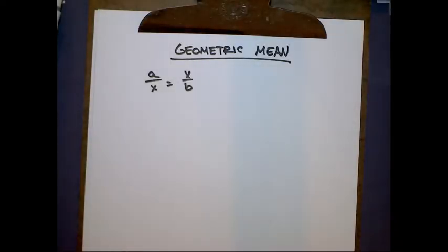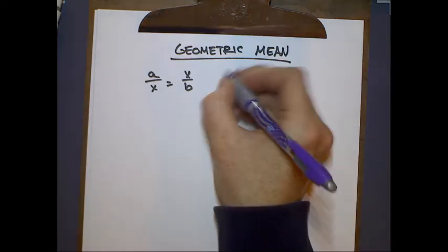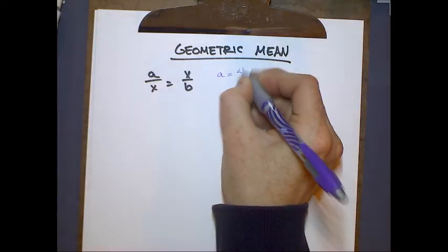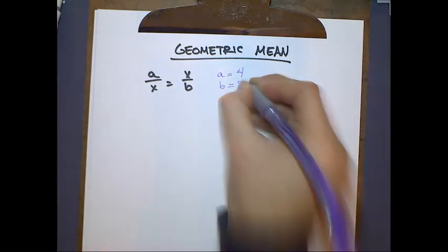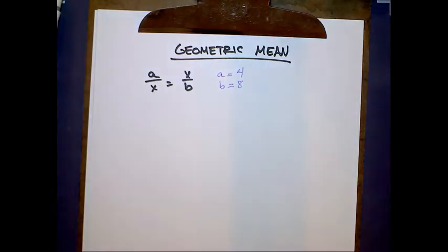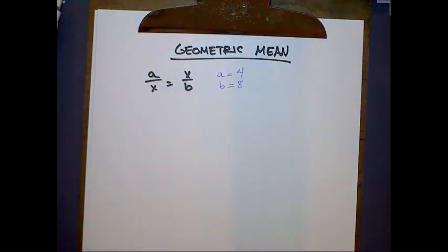The geometric mean of two numbers a and b is the value x that satisfies the following proportion. In other words, if we had two numbers, let's say 4 and 8, we could find their geometric mean by plugging them into this equation and solving for x.